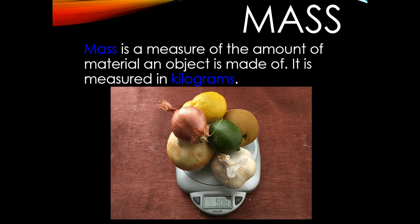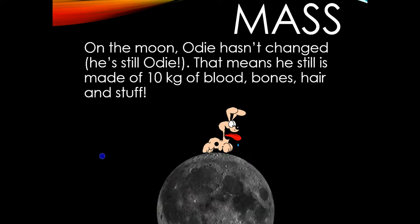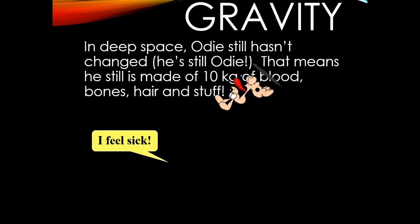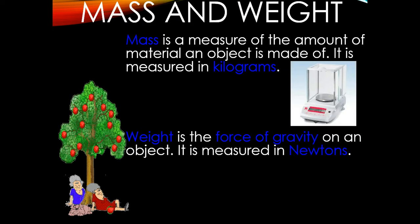Mass measures the amount of material of an object, and it's measured in kilograms. OD has a mass of about 10 kilograms — that means he's made of 10 kilograms of blood, bones, hair, and stuff. That's his mass on Earth. If he goes to the Moon, OD hasn't changed; he still has a mass of 10 kilograms. If he goes to space, he's still made of 10 kilograms of blood, bones, hair, and stuff. So mass is the measure of how much material you have, measured in kilograms, and weight is the force of gravity on the object, measured in newtons.